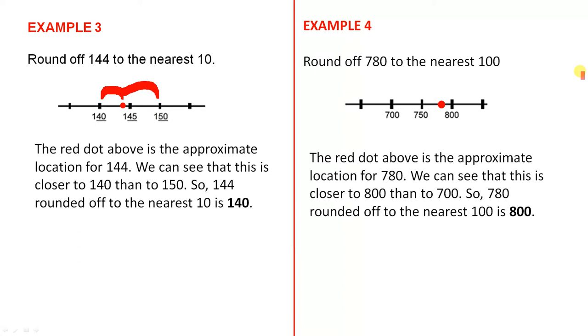Example 4, round off 780 to the nearest 100. The red dot above is the approximate location for 780. We can see that this is closer to 800 than to 700. So 780 rounded off to the nearest 100 is 800.